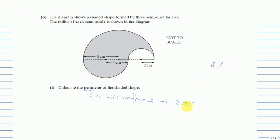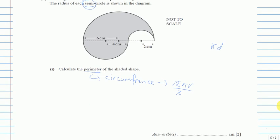This formula is for a full circle, but we have three semicircles. Semicircle means half, so if we divide the formula by 2, we are left with only πr. To find the perimeter, we use πr for each of the three semicircles. Starting with the largest one, this arc is πr = π times 6.